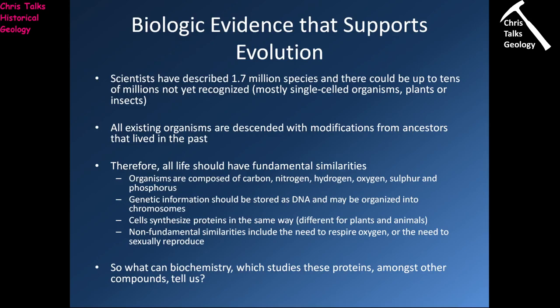Because the theory of evolution predicts this relationship, we should be able to see fundamental similarities between life on Earth. At the most basic level we should all be made of the same stuff. Life on Earth consists of carbon, nitrogen, hydrogen, oxygen, sulphur and phosphorus — and that goes for all life on Earth. So that's a good piece of evidence to suggest we are related.